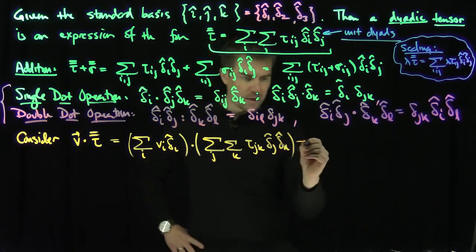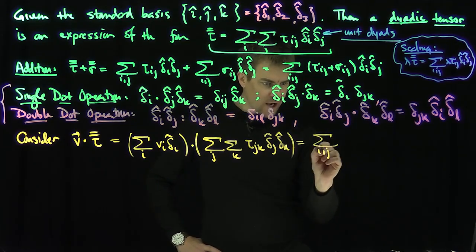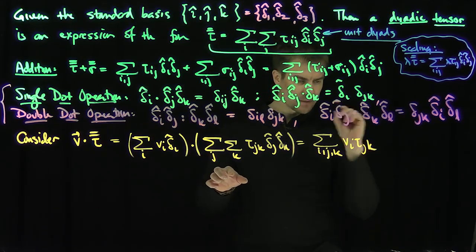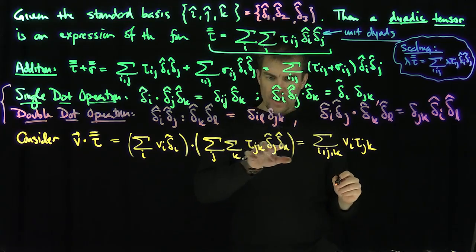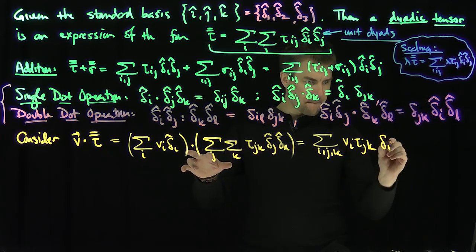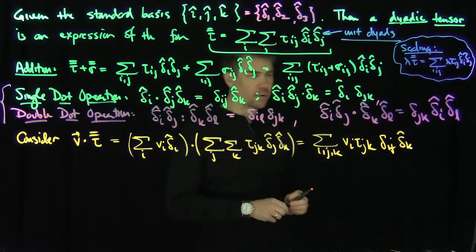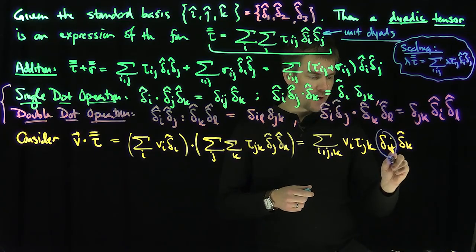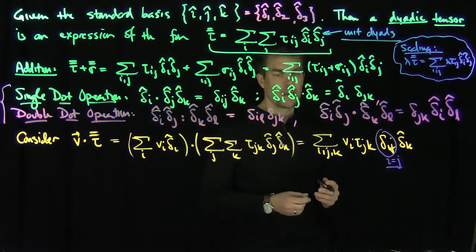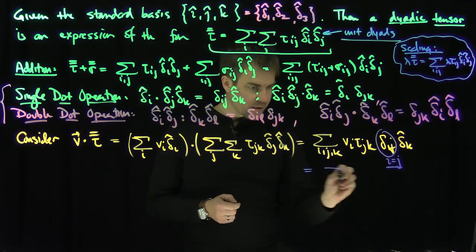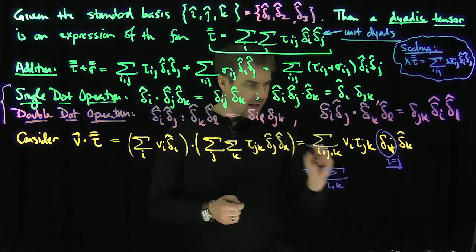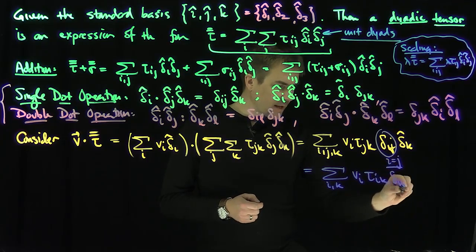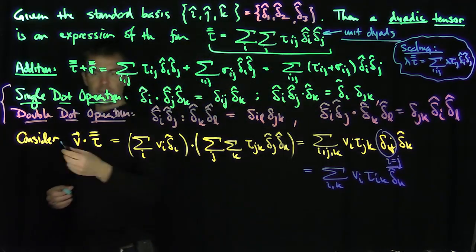Carrying out the dot operation, I get three sums over i, j, and k of v_i tau_jk with delta-i-hat dot delta-j-hat giving delta_ij, leaving delta-k-hat. The delta_ij contracts i and j, replacing all i's with j. So I get the sum over i and k of v_i tau_ik delta-k-hat. That's the expression for v dot tau.